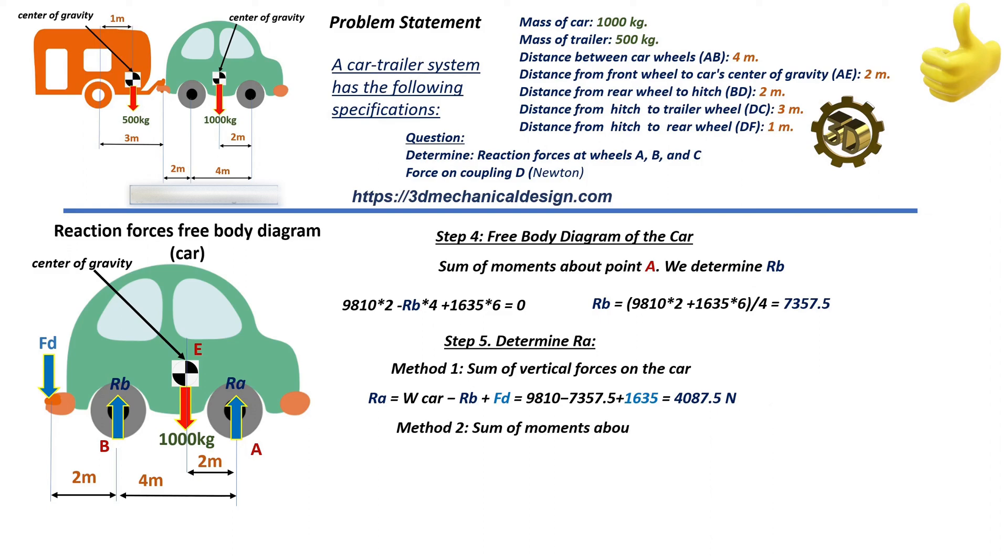Method 2: Sum of moments about point B. RA equals 9,810 times 2 minus 1,635 times 2 divided by 4 equals 4,087.5 newtons. Both methods confirm RA equals 4,087.5 newtons.